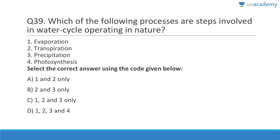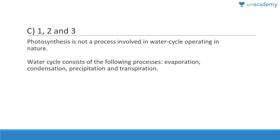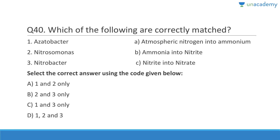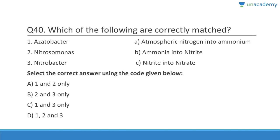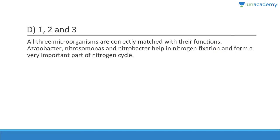Question 39: The following processes are steps involved in the water cycle: evaporation, transpiration, and precipitation. Answer is C, 1, 2, and 3. Photosynthesis is not a process involved in the water cycle. Question 40: Azotobacter converts atmospheric nitrogen into ammonia; Nitrosomonas converts ammonia into nitrite; Nitrobacter converts nitrite into nitrate. Answer is D, 1, 2, and 3. All three are correctly matched and are very important parts of the nitrogen cycle.